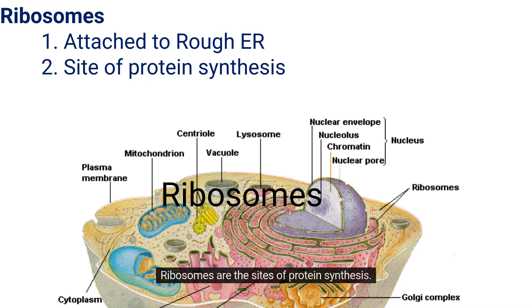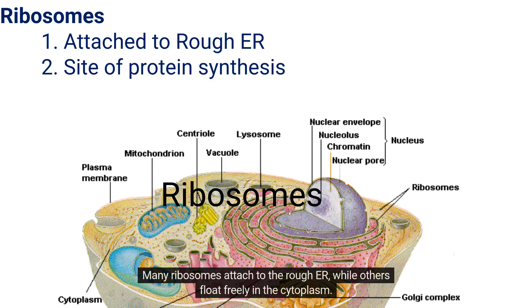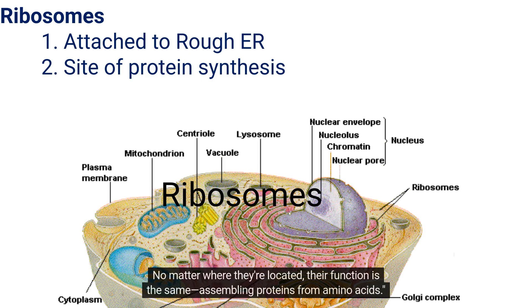Ribosomes are the sites of protein synthesis. Many ribosomes attach to the rough ER, while others float freely in the cytoplasm. No matter where they're located, their function is the same: assembling proteins from amino acids.